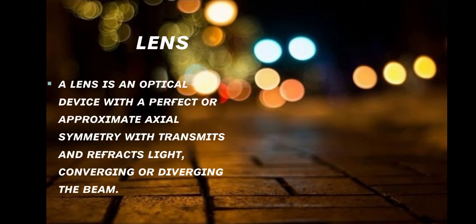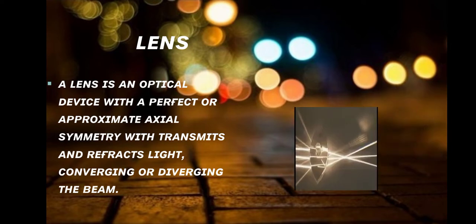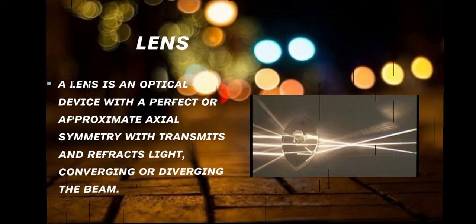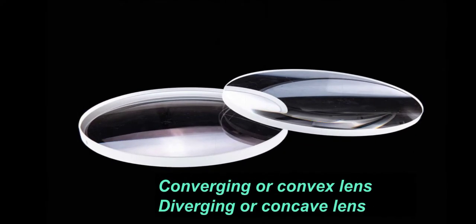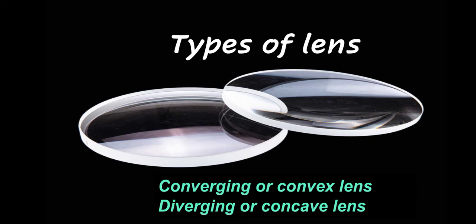Lens. A lens is an optical device with a perfect or approximate axial symmetry that transmits and refracts light, converging or diverging the view. The two types of lenses are converging or convex lens, and diverging or concave lens.